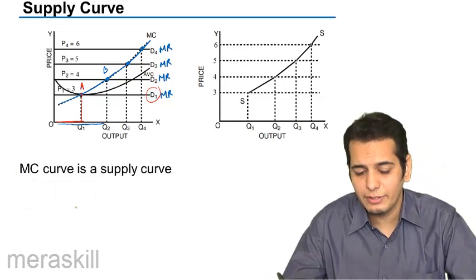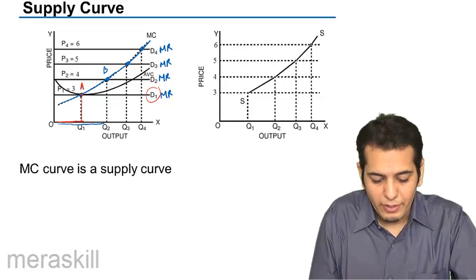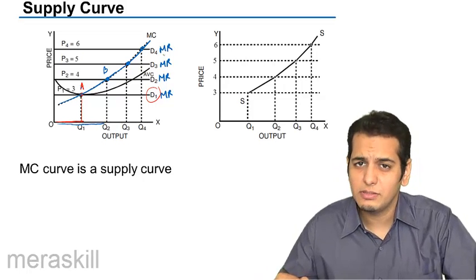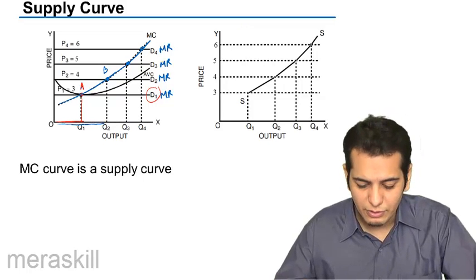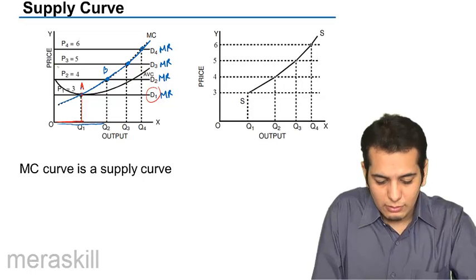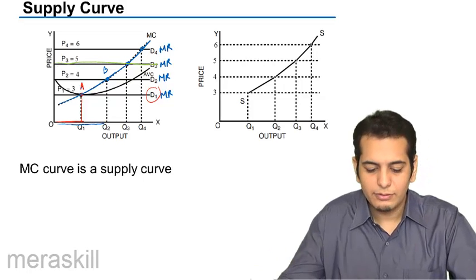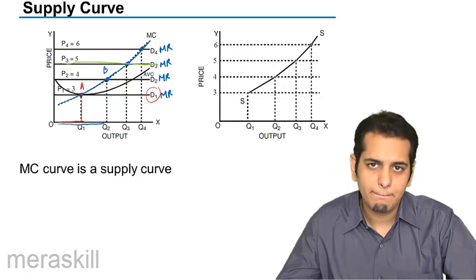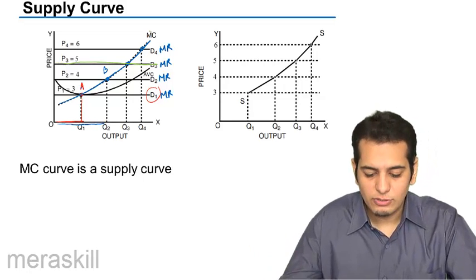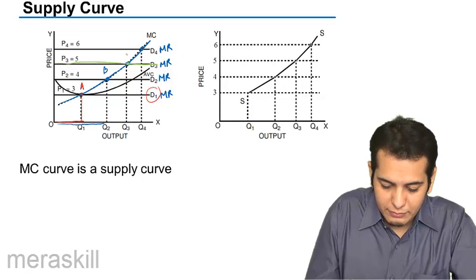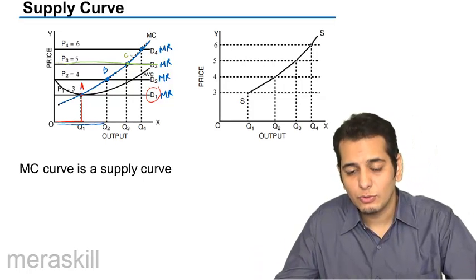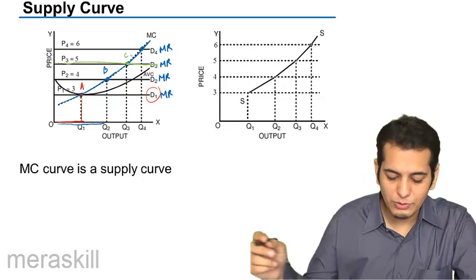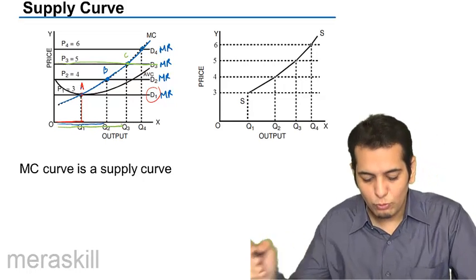In the third case, the price rises to Rs 5, so demand also rises. The marginal revenue line is the price line as well as the demand line. The marginal cost curve cuts this line at point C, which is the equilibrium point. The firm should produce and sell OQ3 amount of goods.